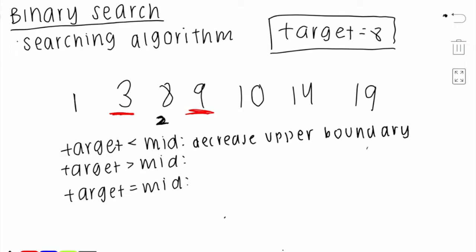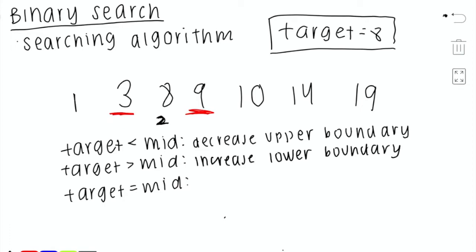Now both our lower and upper boundary are at 2. The reason we increased our lower boundary is because we know the target cannot be 1 or 3, since we established the target is greater than mid. Our array has been reduced to just index 2, and the only element remaining is 8. We perform binary search again, checking if the target is less than, greater than, or equal to mid. In this case, the target equals mid — 8 equals 8 — and so we have found our answer. Binary search is complete.